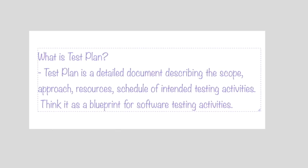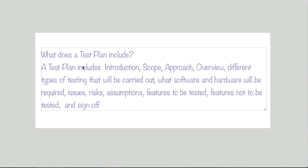What is a test plan and what does it include? A test plan is a detailed document describing the scope, approach, resources, and schedule of intended testing activities. It covers how many QA testers are needed and what tools the project requires. The test plan includes: introduction, scope, approach, overview, different types of testing, software and hardware requirements, issues, risks, assumptions, features to be tested, features not to be tested, and sign-off.